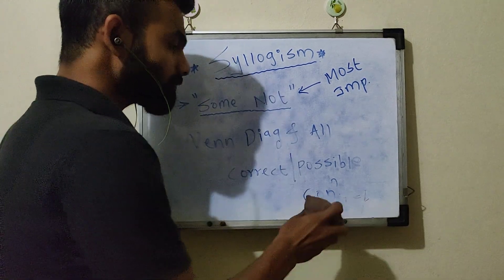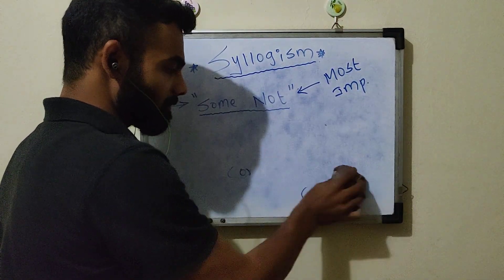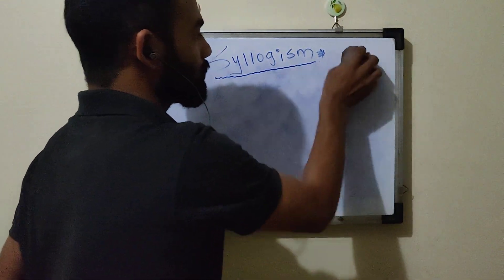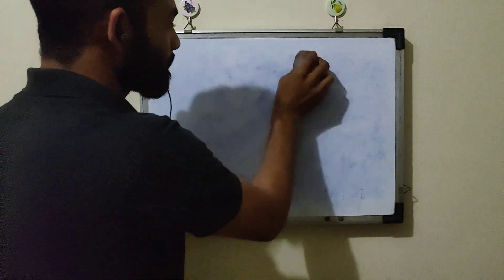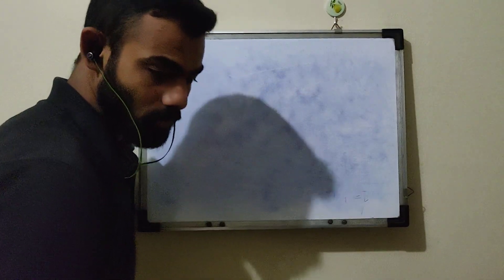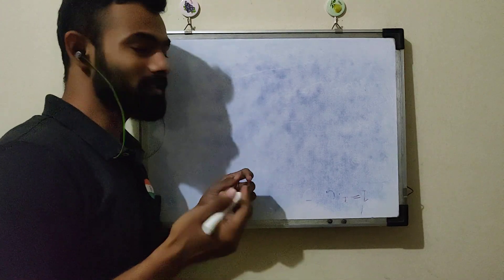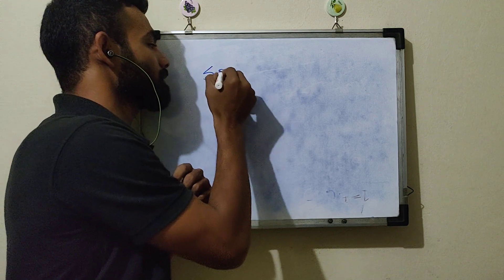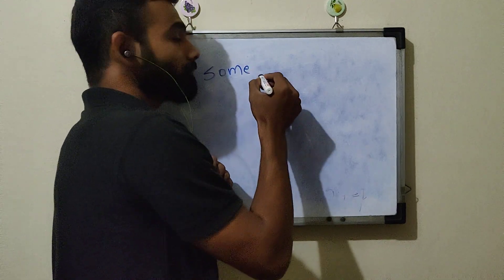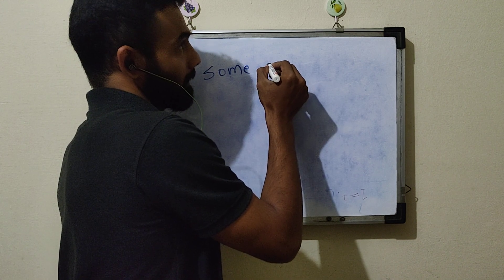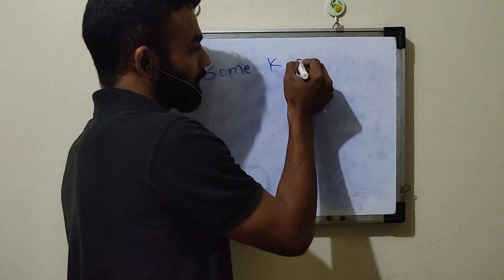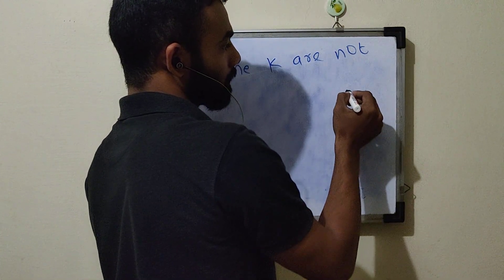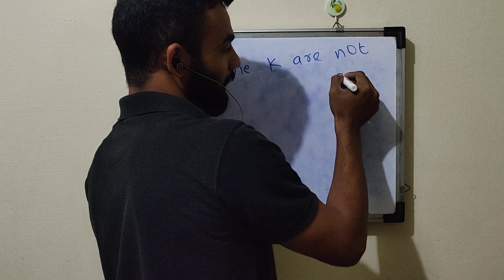Last time we had seen 'some.' Now let's take an example: 'Some K are not N.' We will work through this to understand the concept.